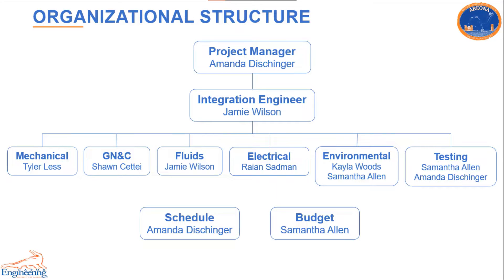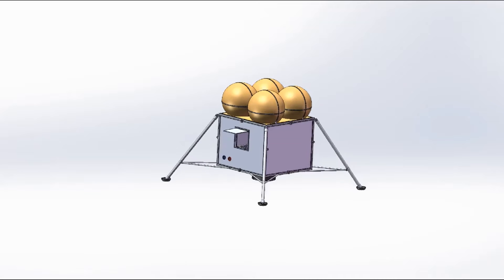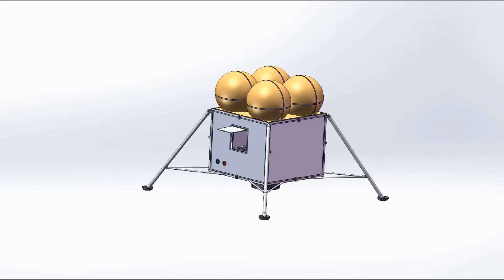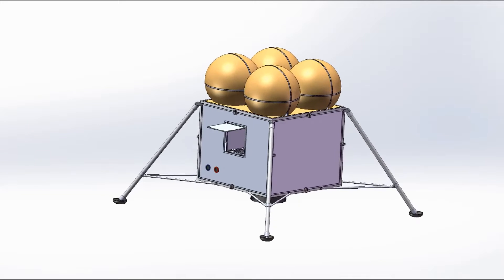The team consists of seven engineers with these designated roles. The team proposes Aviona as a robust system to assist in the next generation of lunar missions.